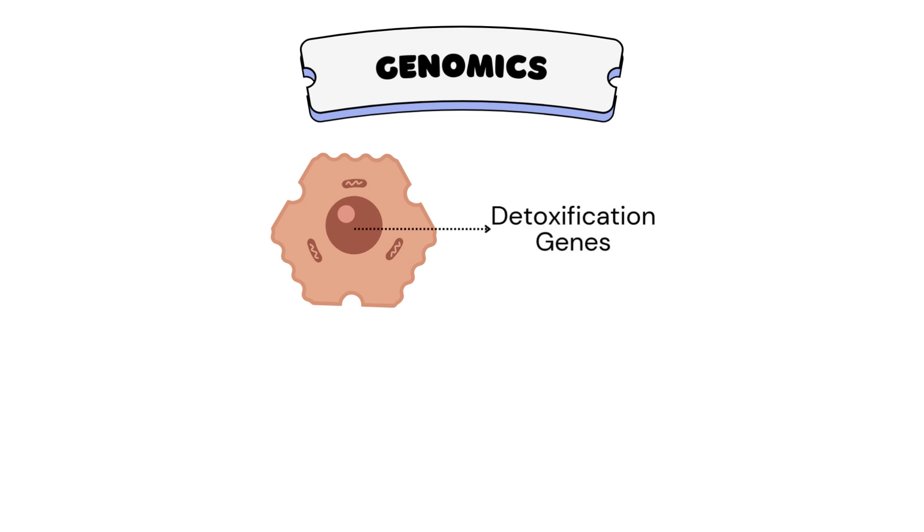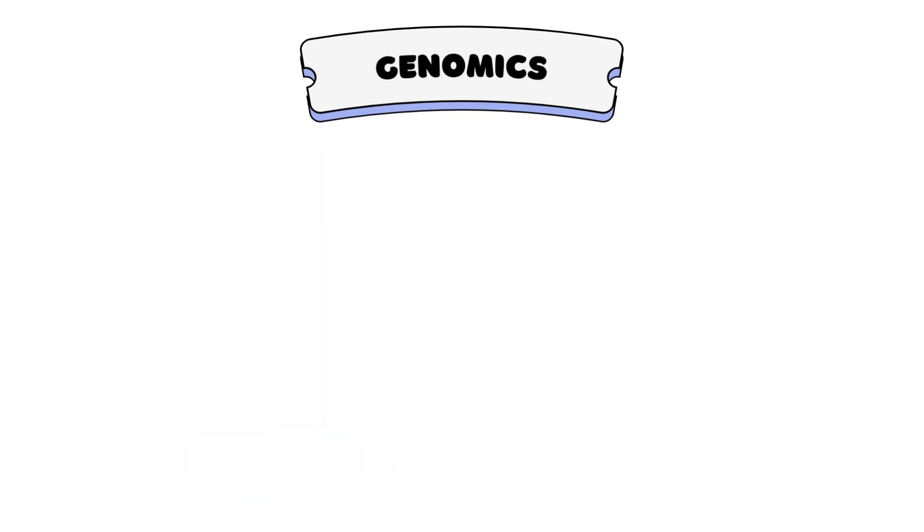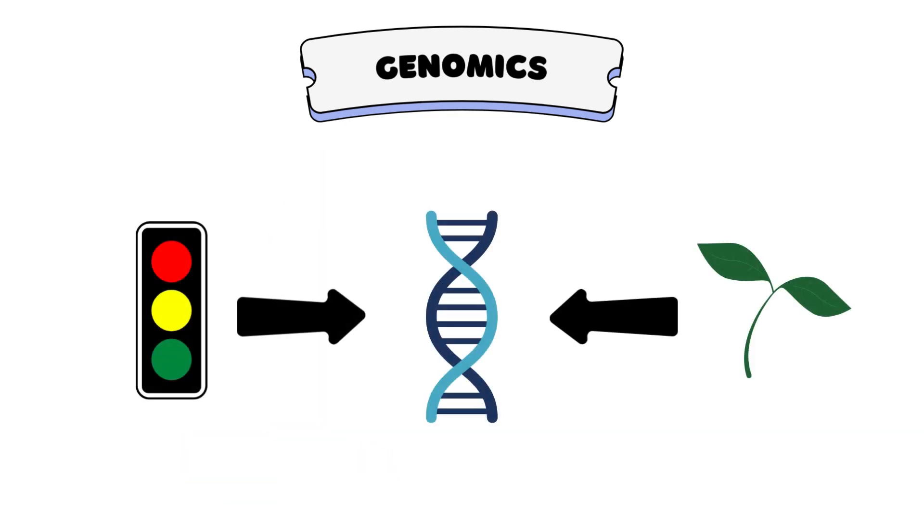liver cells express genes involved in breaking down toxins, while neurons express genes that support the transmission of electrochemical signals. Gene expression can also change in response to external signals or environmental factors.